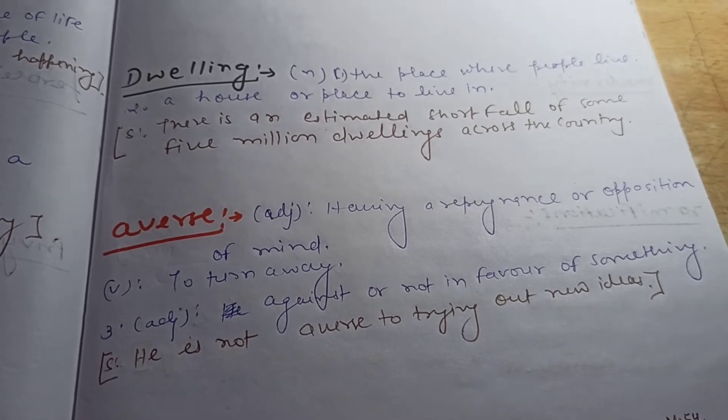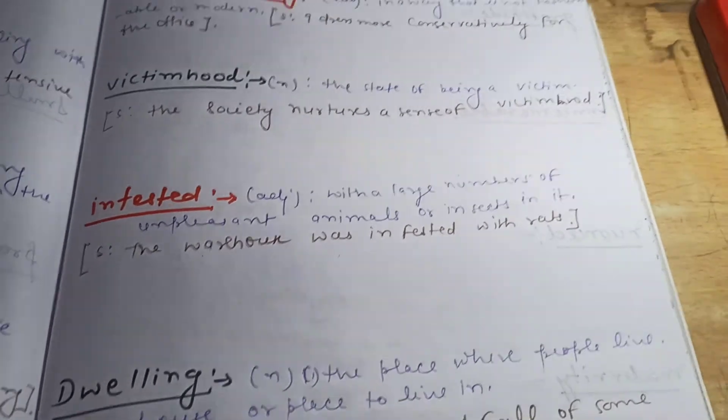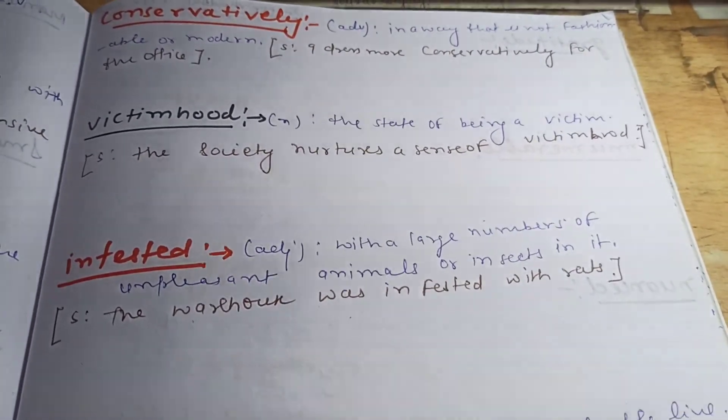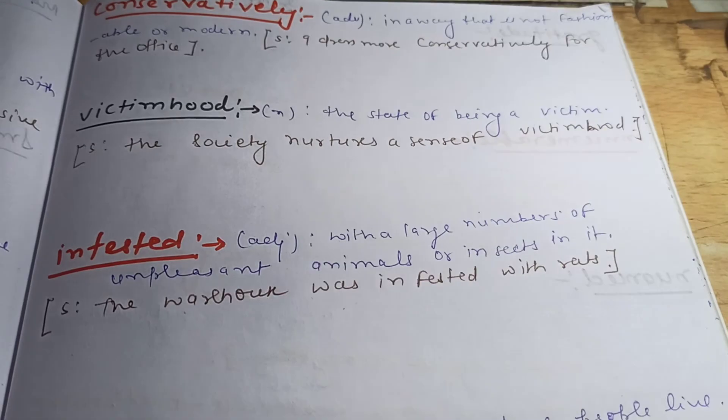So friends, today we completed averse, dwelling, infested, victimhood, and conservatively. So with this, I would like to conclude. Bye bye, take care, Afil this side.